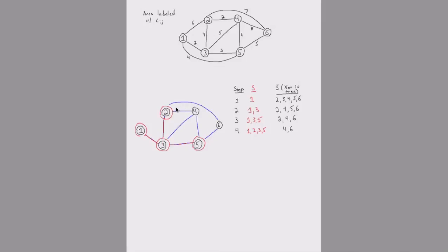Looking at all the blue arcs — arc 2-6, arc 2-4, arc 3-4, arc 4-5, and arc 5-6 — the cheapest is arc 2-4 with a cost of 2. So using arc 2-4, we're going to bring node 4 into the network.